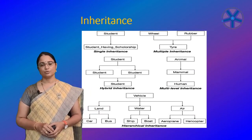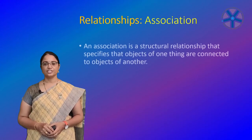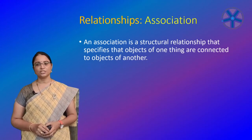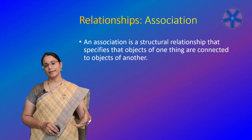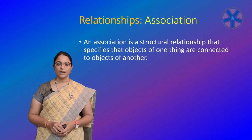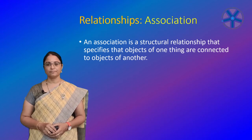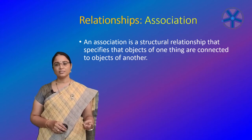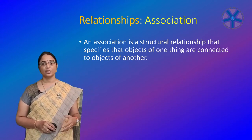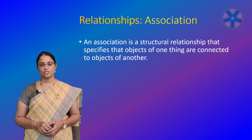Coming to the association: an association is a structural relationship that specifies that objects of one thing are connected to the objects of another — it is like a semantic relationship. An association that connects exactly two classes is known as a binary association. You can also have associations that connect more than two classes — connecting three classes is called tertiary.